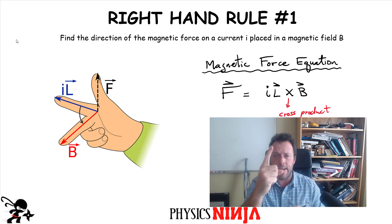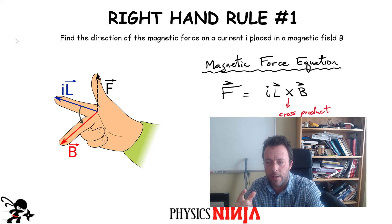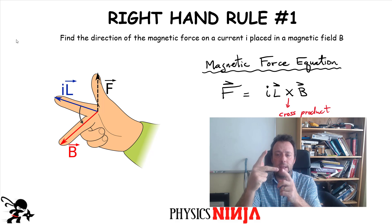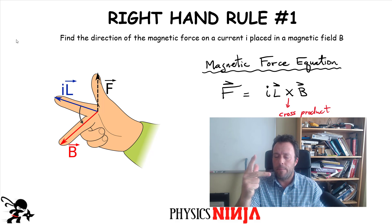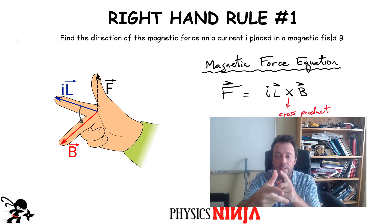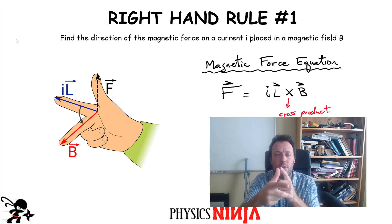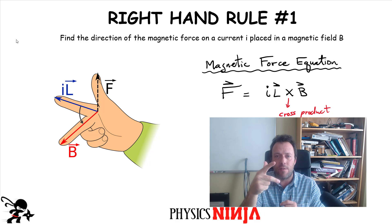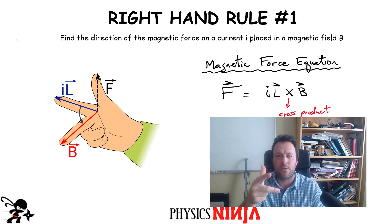For right-hand rule number one, you take your index finger and point it in the direction of the first vector — that is the direction of the current. Your middle finger points in the direction of the magnetic field, and your thumb gives you the direction of the cross product. This gives you the direction of the magnetic force acting on that current. This is one of many methods; this is the method I prefer to use.